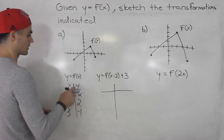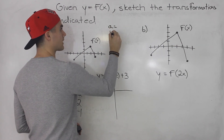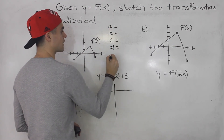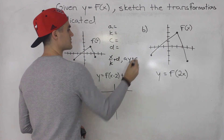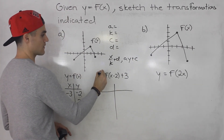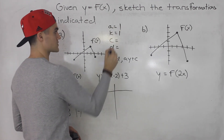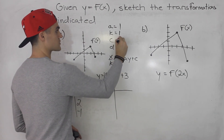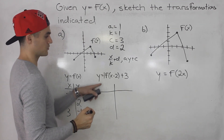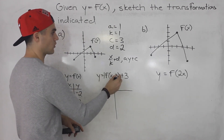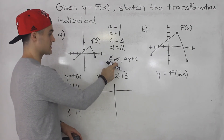So now this is the parent function table and we're going to transform it. When we transform it, we need the a value, the k value, the c value, and the d value. Then we're going to transform it with the formula x over k plus d, and a times y plus c. So here, the a value is one — there's nothing in front. The k value is one as well. The c value is three, and the d value is positive two. Whenever you're given a function like this in general format, get the transformation values, then plug into the formula.